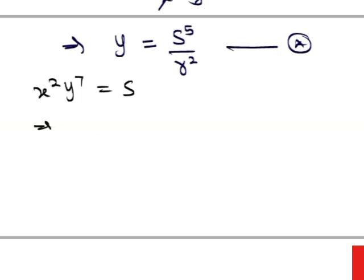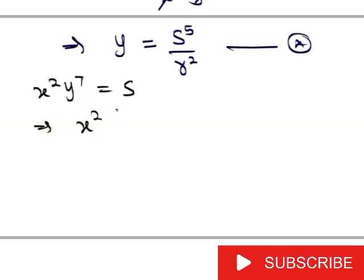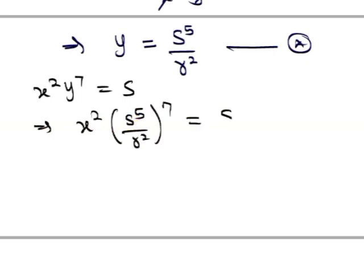So what it means then is that our x^2, our y now is s^5 / r^2 raised to the 7th power. So if we open this bracket, we'll now get...